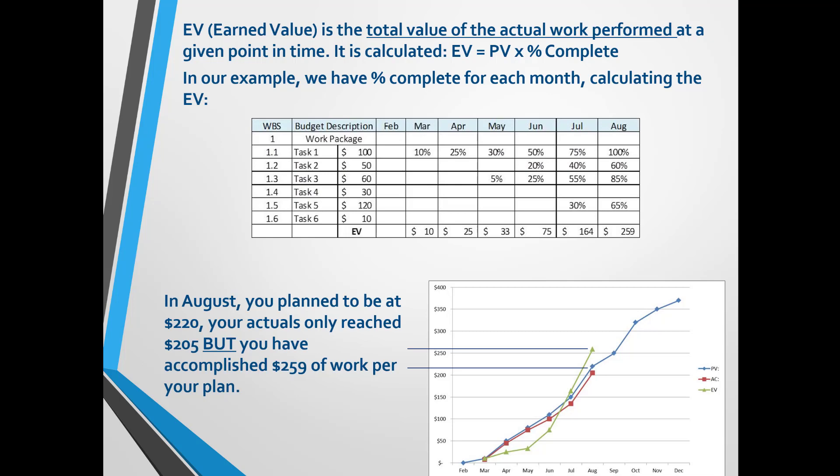When we plot the EV curve on the graph, you can see that the project has completed more work than planned, and the work performed should have cost more than the AC to date — this is a great place to be in for a project. On the other hand, if the work performed was below the AC curve, it would tell you that you need to do more work and chances are you will be going over budget.